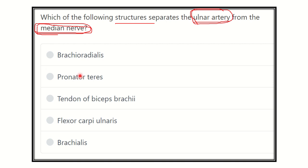The options are: brachioradialis, pronator teres muscle tendon or biceps brachii, flexor carpi ulnaris, and brachialis. So first of all, let's look at the ulnar artery and median nerve.